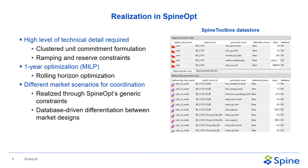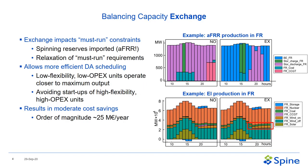On the right-hand side is a screenshot from the SpineToolbox data store. Looking at the results for the exchange of balancing capacity: we see that must-run constraints are relaxed, leading to more efficient day-ahead scheduling. Lower flexibility, low OPEX units can operate closer to maximum output and we avoid unnecessary startups. On the upper left graph, we see the no-exchange case where CCGTs need to be started up to provide AFRR, which is not the case for the exchange scenario. In France, we can eliminate the startup of these CCGT units, resulting in moderate cost savings of about 25 million euros per year.